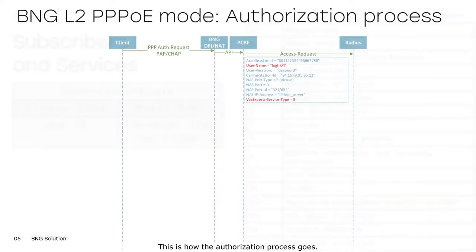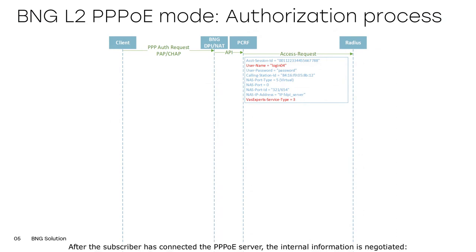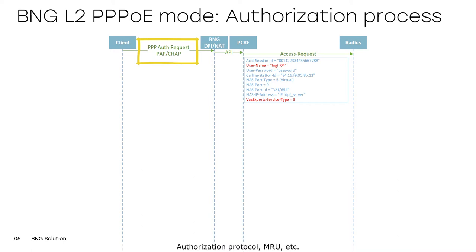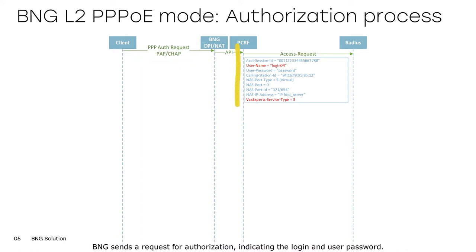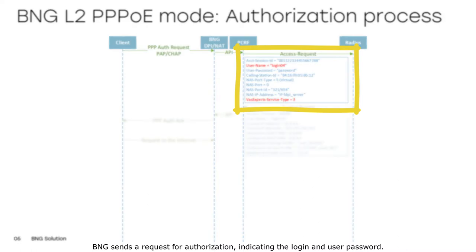This is how the authorization process goes. After the subscriber has connected to the PPPoE server, the internal information is negotiated — authorization protocol, MRU, etc. BNG then sends a request for authorization, indicating the login and user password.